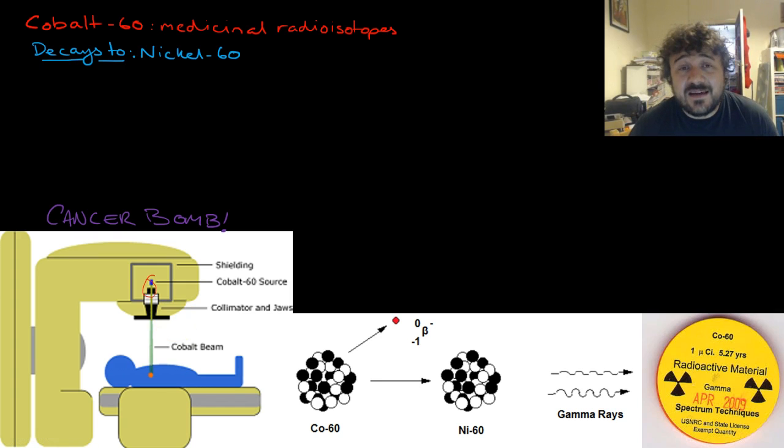So it decays to nickel-60. It starts off as cobalt-60 and decays to nickel-60, and while doing this it emits beta and gamma radiation.